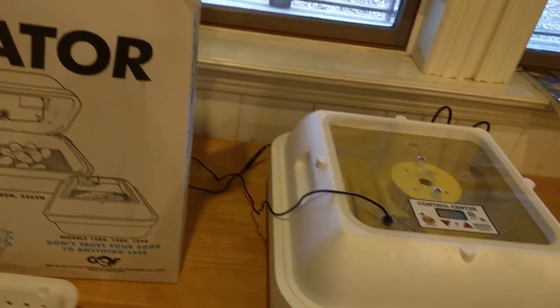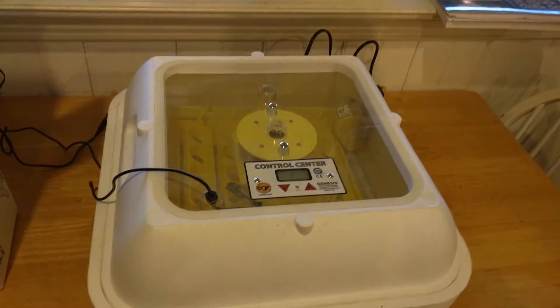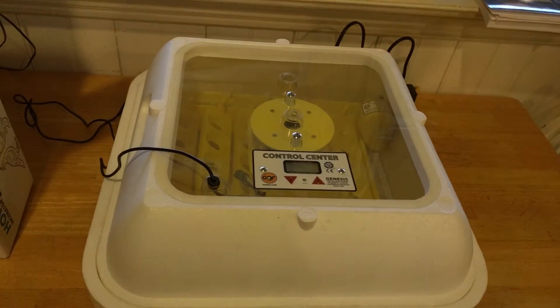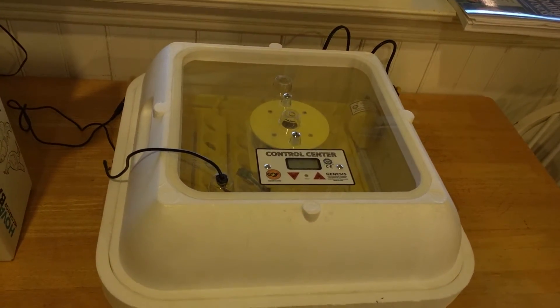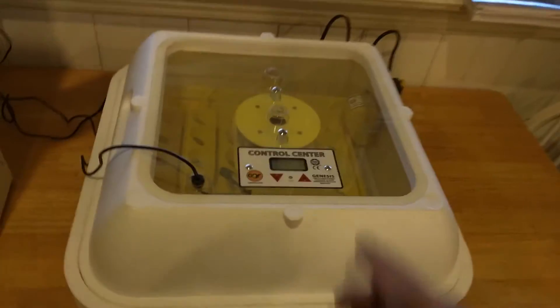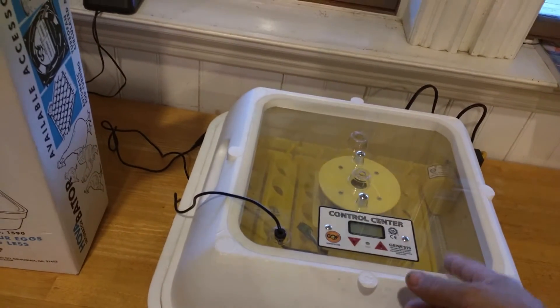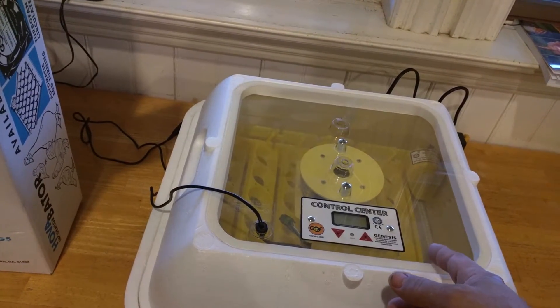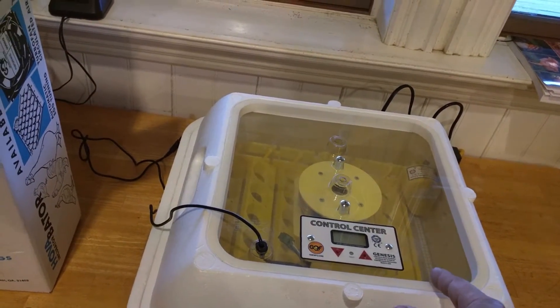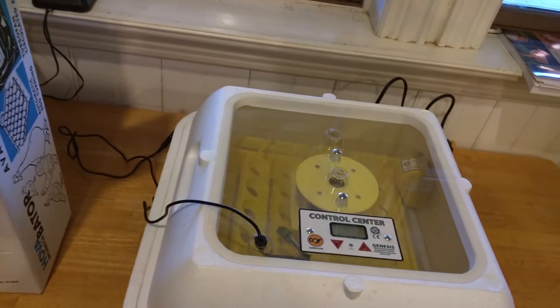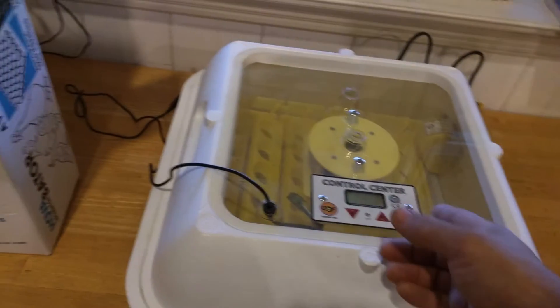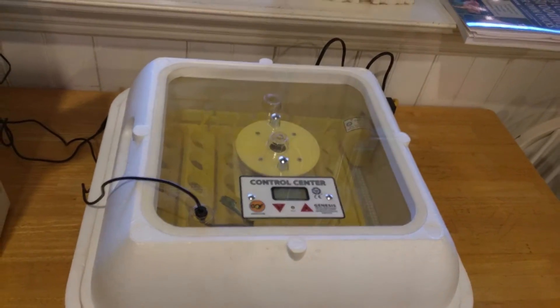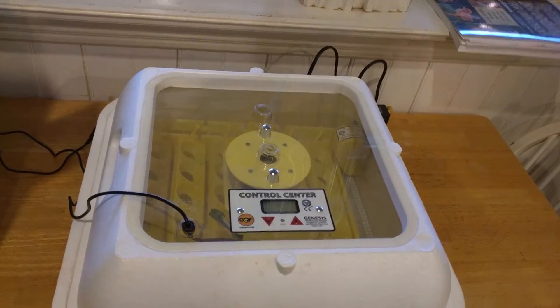I did get the automatic egg turner made for this one. This whole system was around $200. So it is a little spendy, but you can produce chickens all year long without even a hen. And you can see this will also do quails, ducks, pheasants. I think you got to take the egg turner out, but you can even do ostriches.